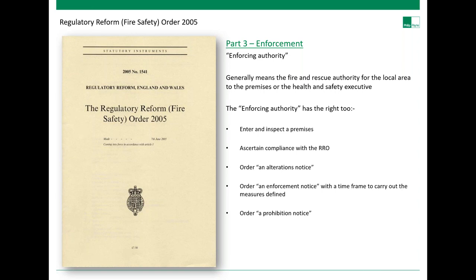Part three of the Regulatory Reform Order 2005 covers enforcement. The enforcing authority is generally the fire and rescue authority of the local area or the Health and Safety Executive. The enforcing authority has the right to enter and inspect buildings for compliance with the RRO. If the building is not up to the required standard in terms of emergency lighting, they can order an alterations notice or even a prohibition notice, as well as enforcement notices with a timeframe to carry out defined measures.